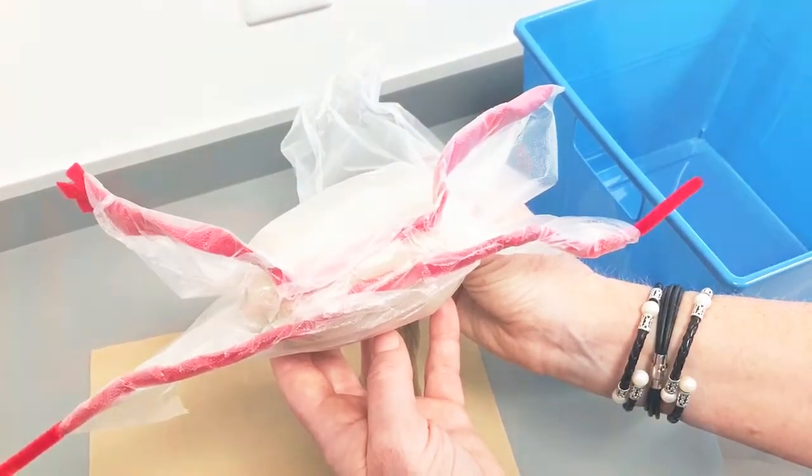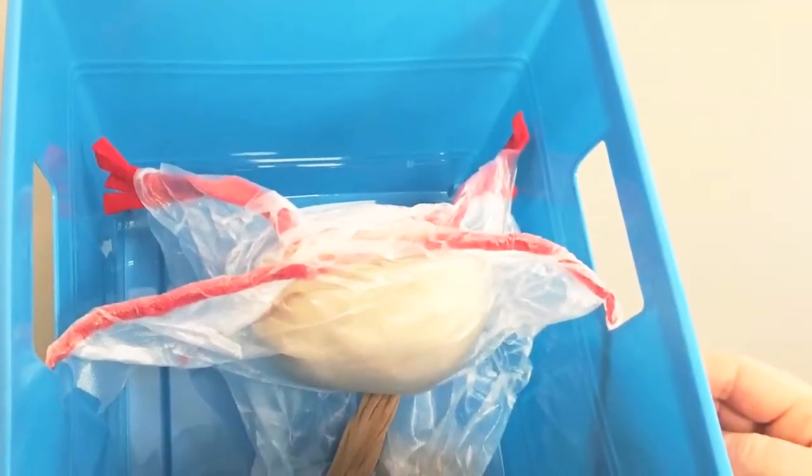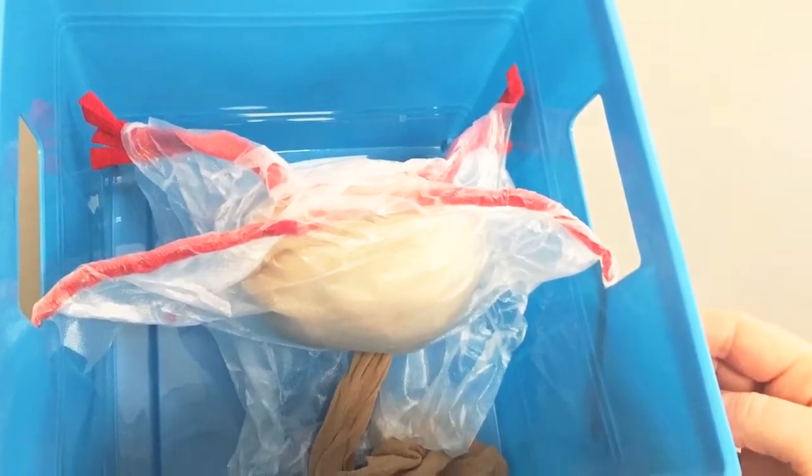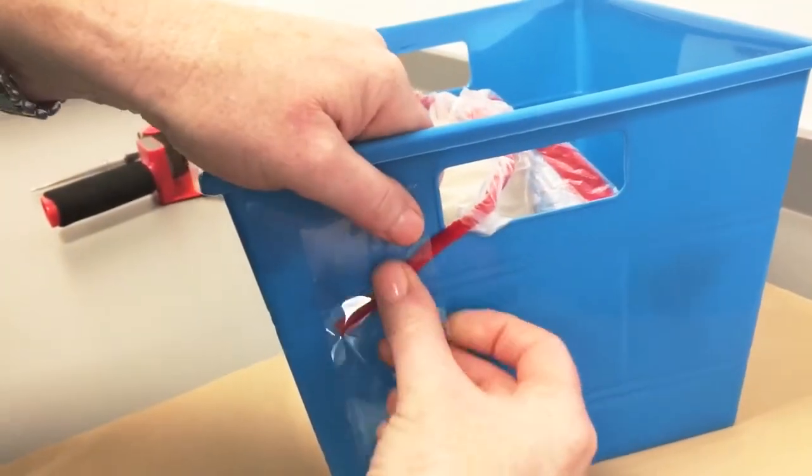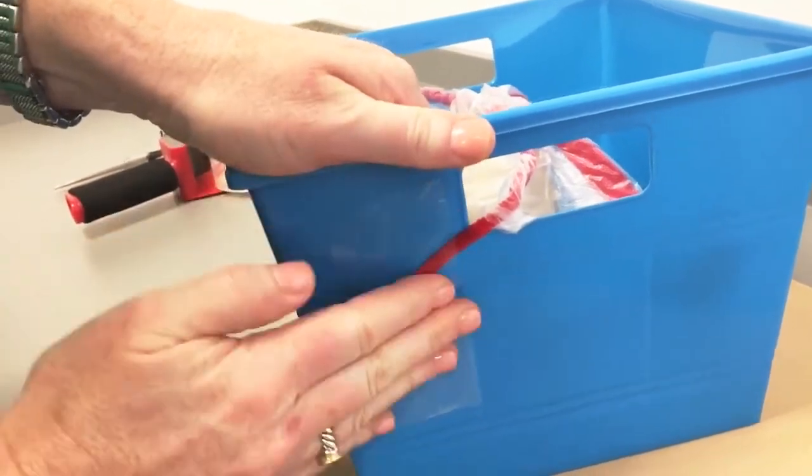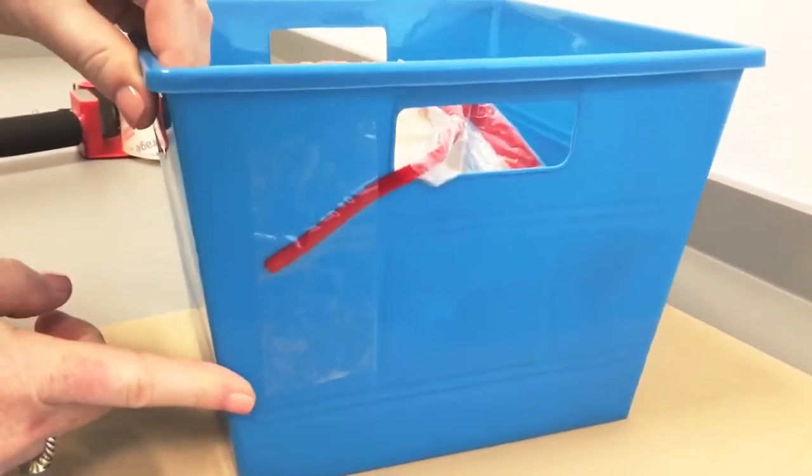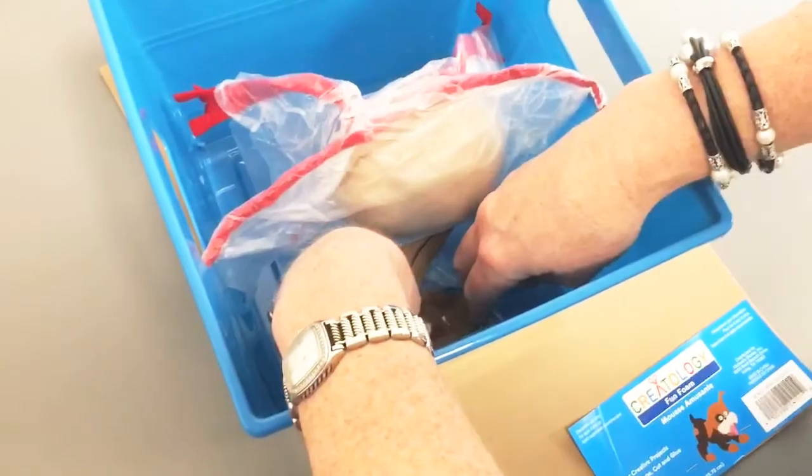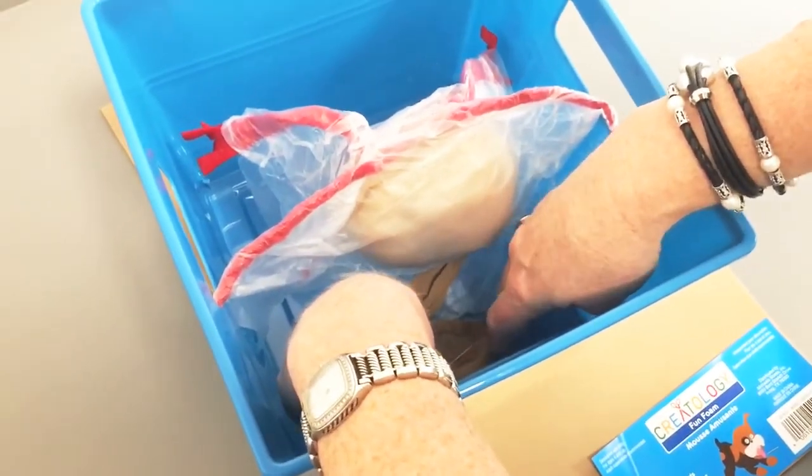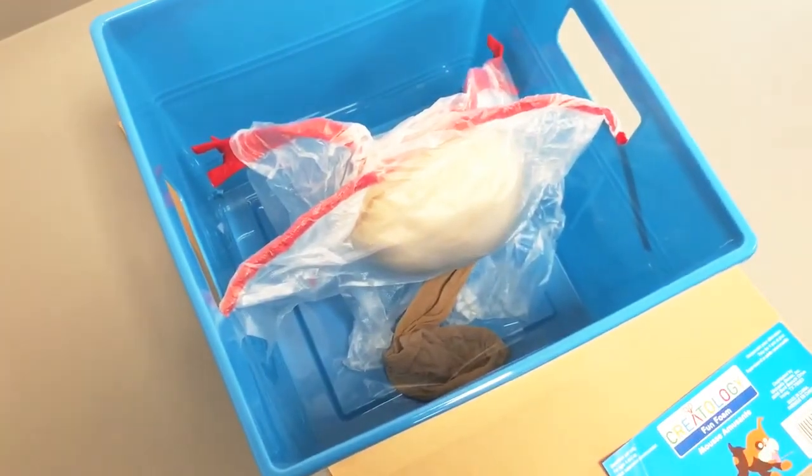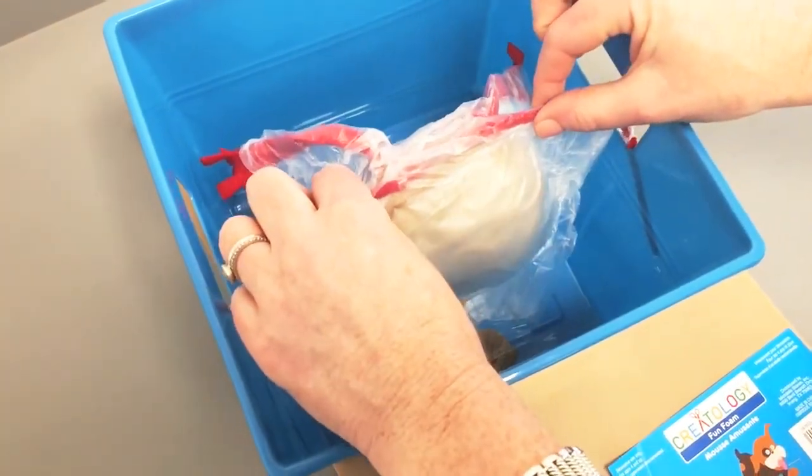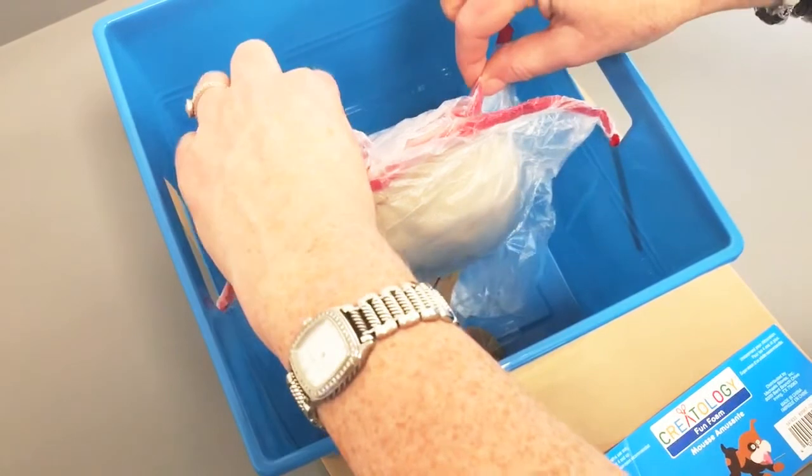The model is then placed into the plastic bin with the pipe cleaner round ligaments protruding through the handles. The pipe cleaners are then firmly taped to the side of the bin on both sides. The end of the nylon uterus is then taped to the base of the bin. Much like a real postpartum uterus, the model should have some mobility.